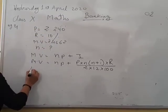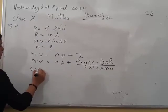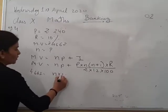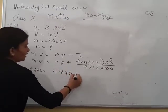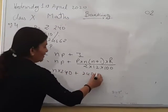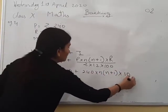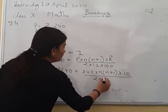And as we know the formula for the I is P into N, N plus 1 into R upon 2 into 12 into 100. Now this is the formula. Substitute the values, all the values in this one now. Maturity value is 4662, number of installments we don't know, N. P is 240 here, then 240, N into N, N plus 1, R is 10, upon 2 into 12 into 100.